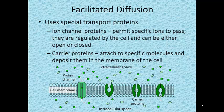Ion channel proteins permit specific ions to pass through the protein channel. They are regulated by the cell and are either open or closed to control the passage to the inner parts of the cell. Carrier proteins attach to specific molecules, change their shape, and deposit the molecules across the membrane. After everything is completed, the proteins go back to their initial positions.